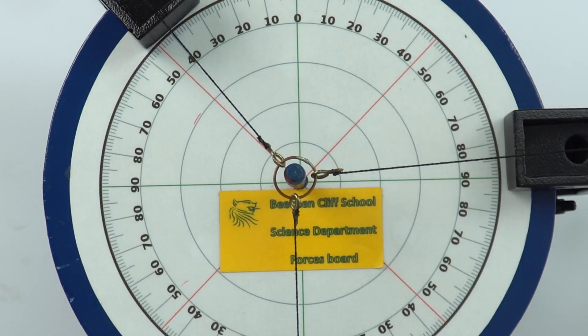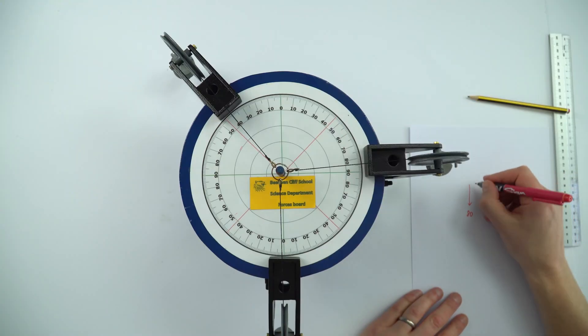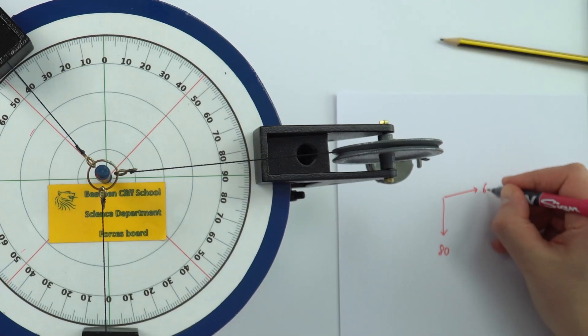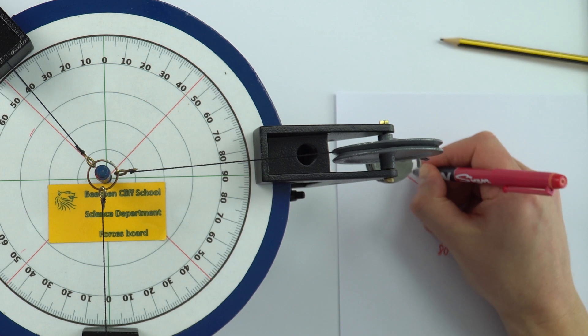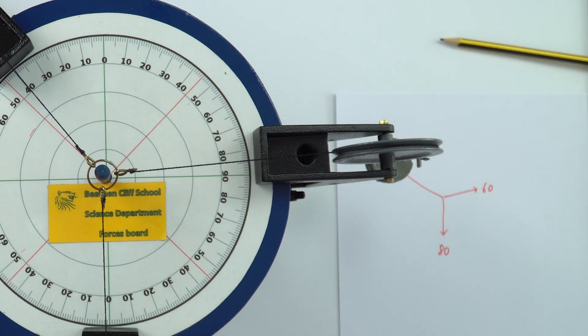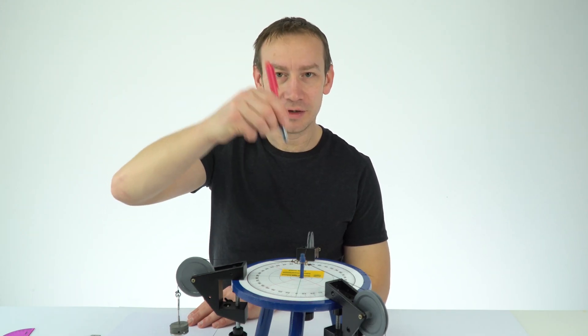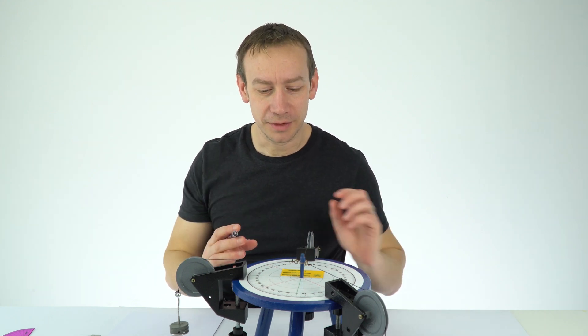I'm just going to put a quick sketch down here. So we've got 80 grams down here, to the right we have 60 and over here we have 100. I'm going to put my head directly above it so I can look down and this is going to reduce any parallax error.